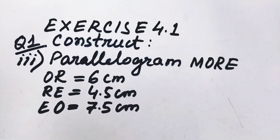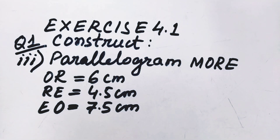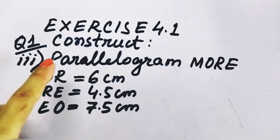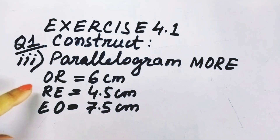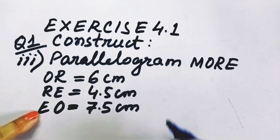Hello students, welcome back to Practical Geometry Class 8. This is Exercise 4.1. We have already learnt in the last class how to construct a quadrilateral when all four sides are given and one diagonal is given. But in this class we are going to construct a parallelogram where both adjacent sides are given and one of the diagonals is given.